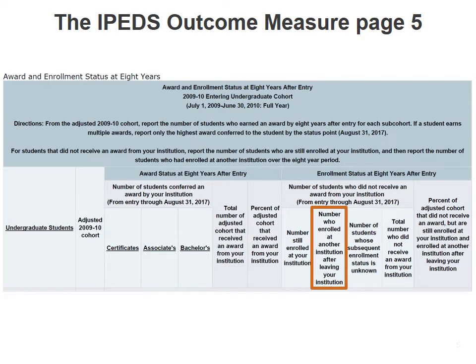Once you're in the actual survey, you can scroll down to page five. This is where we think Student Tracker will be able to help you with one of those columns. Most of the columns that you report are for students at your own institution, and you should be able to get that data. But the column a little to the right of the middle — for students who did not get an award from your institution — asks for the number who enrolled at another institution after leaving yours. This is the column for which you can use Student Tracker.